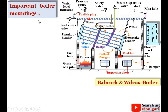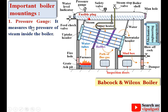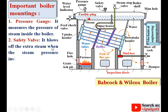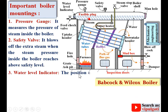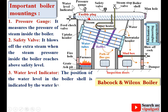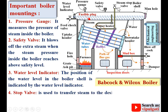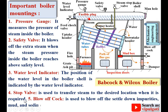Now the important boiler mountings. First, the pressure gauge — it measures the pressure of the steam inside the boiler. Second, the safety valve — it blows off the extra steam when the steam pressure inside the boiler rises above the safety level. Third, the water level indicator — it indicates the position of the water level in the boiler shell, so you can see the water level inside. Fourth, the stop valve, sometimes called the steam stop valve — it is used to transfer steam to the desired location when required. Fifth, the blow-off cock — it is used to blow off settled impurities, mud, and sediments present in the boiler water with the help of the mud box.